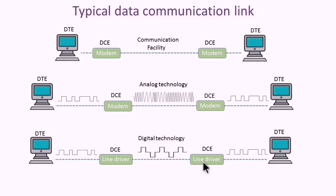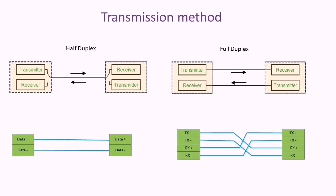The line driver extends the distance of digital signal transmission. Data transmission can happen with either half duplex or full duplex. In half duplex, the data can flow in one direction at a time.